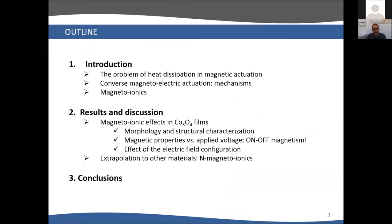In the introduction, I will give you a little bit of background on power dissipation in magnetic actuation. I will talk about different mechanisms that can govern the converse magneto-electric effects. Then I will explain what is magneto-ionic. Concerning our results, I will first describe cobalt oxide films, talking particularly about on-off magnetism. I will explain the effect of the electrical configuration, then talk about nitrogen magneto-ionics, and finally point out some conclusions.